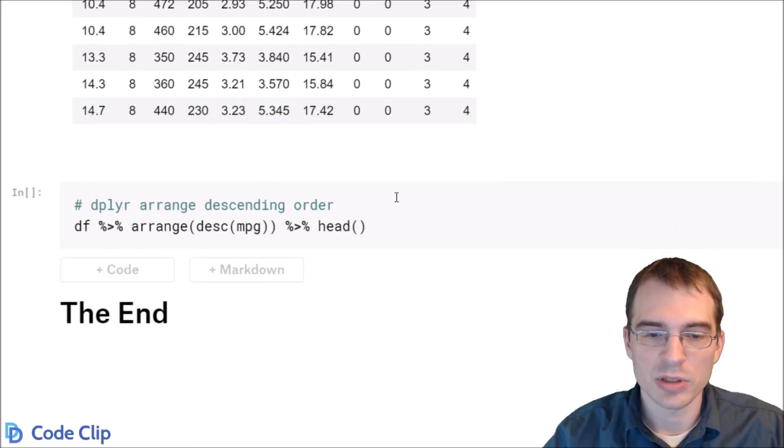And if you want to do it in descending order in dplyr, you just use this desc function instead of the reverse.